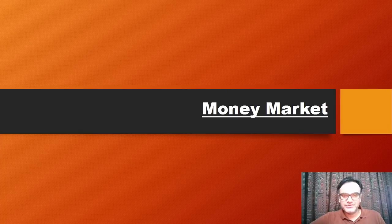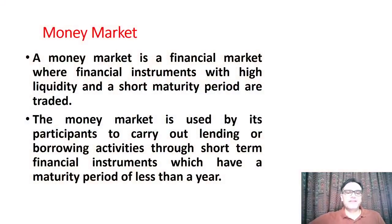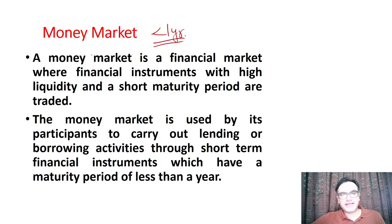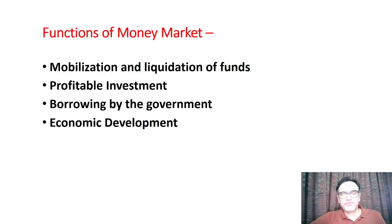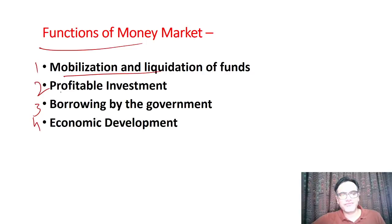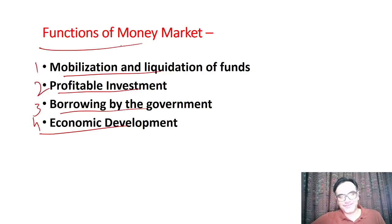The money market is something where borrowing and lending happens for less than one year — you should know this very clearly. There are money market instruments through which this borrowing and lending occurs. For Prelims, you can be asked about the functions of the money market: mobilization and liquidation of funds, profitable investments, borrowing by the government, and economic development. Make sure you commit these to memory.